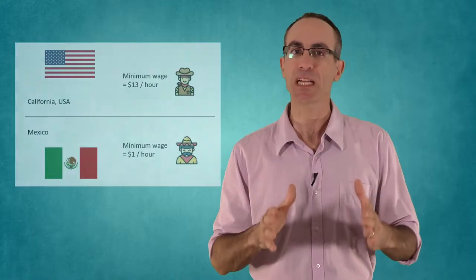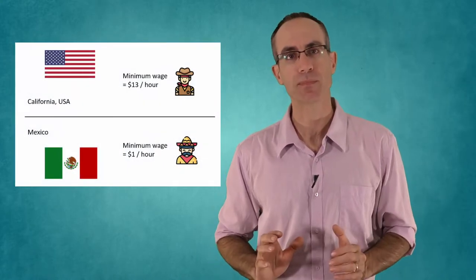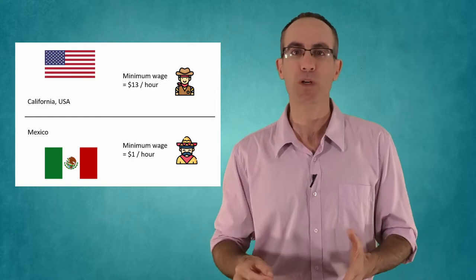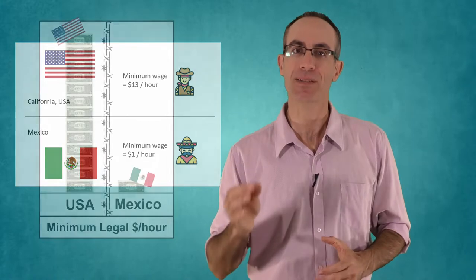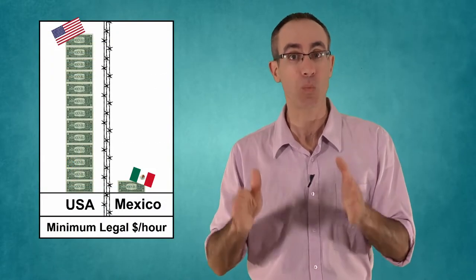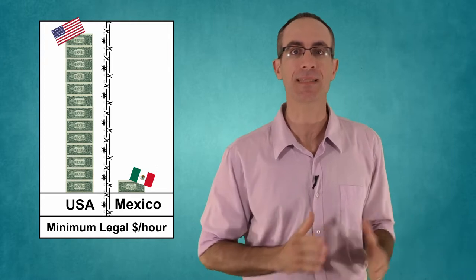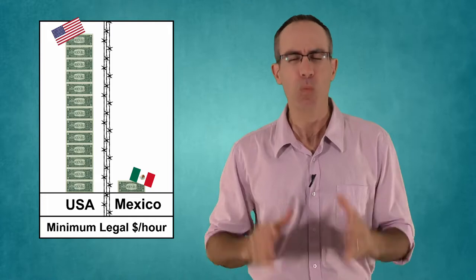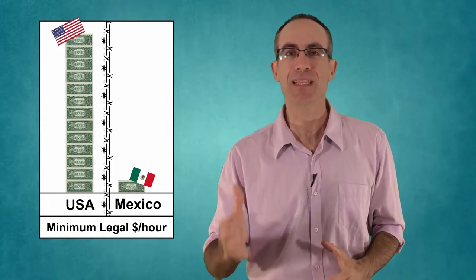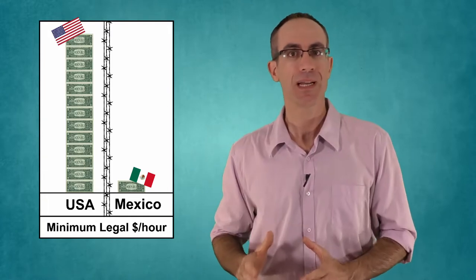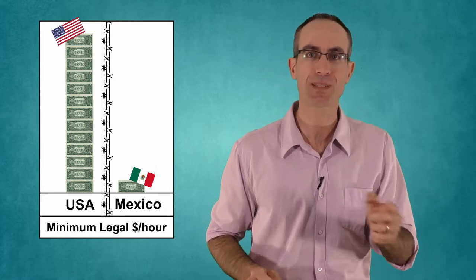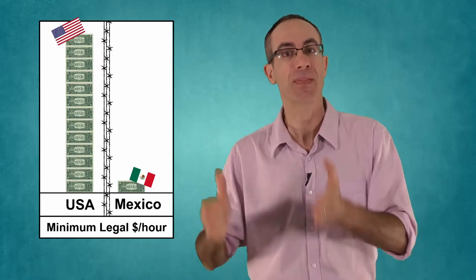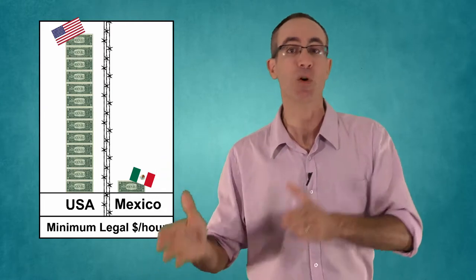Take just for example the border between the state of California in the USA and Mexico. On the Californian side of the fence, it is not legal to pay a worker less than $13 an hour. That is the minimum legal wage. On the Mexican side, the minimum wage equals just one US dollar per hour. What a gap! It means that even for doing exactly the same work, just by being on Californian soil, a worker will get a salary that is 13 times bigger than his fellow worker that stands on Mexican soil.